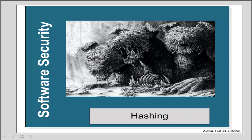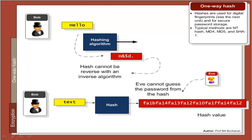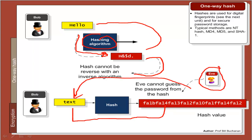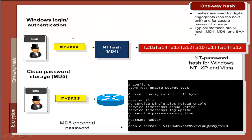The third encryption method is one-way encryption or hashing. We take some text, put it through our hashing algorithm, and get a hash signature. It shouldn't be possible — or it's at least not easy — to reverse that back into the original text. Typical methods include MD4, MD5, and SHA-1. For example, Windows XP and Vista use an NT hash using MD4 to store passwords, and Cisco devices also save an MD5-encoded equivalent of the password.